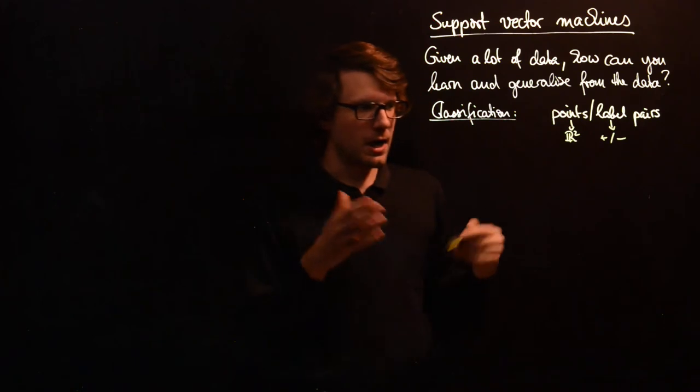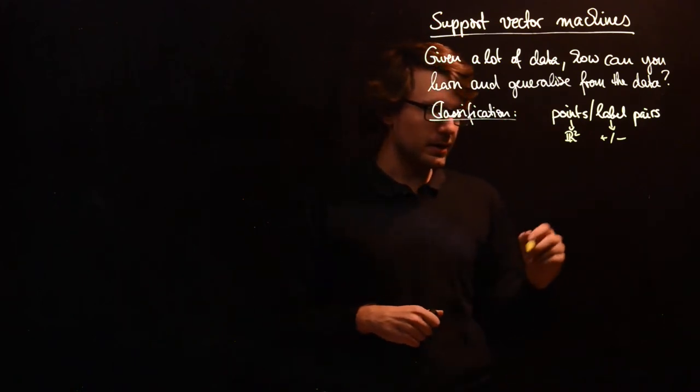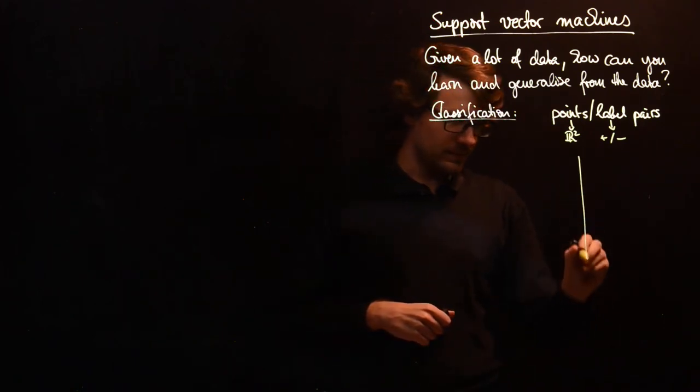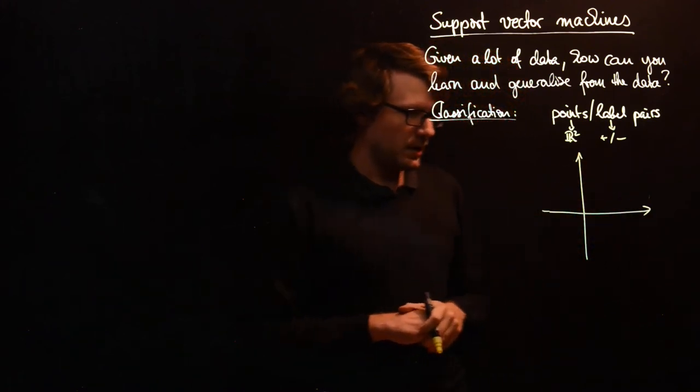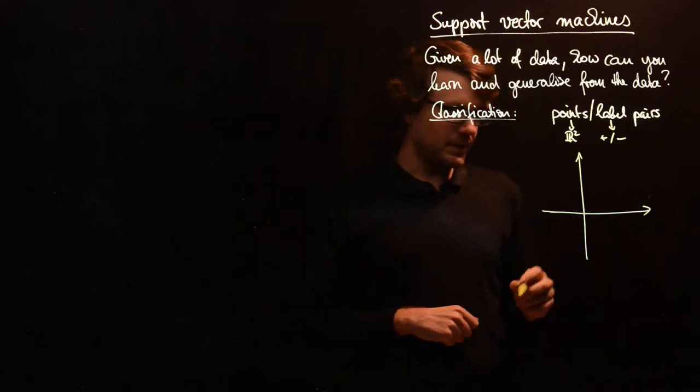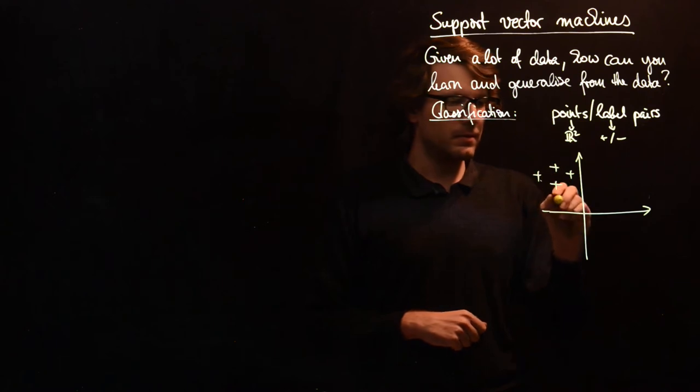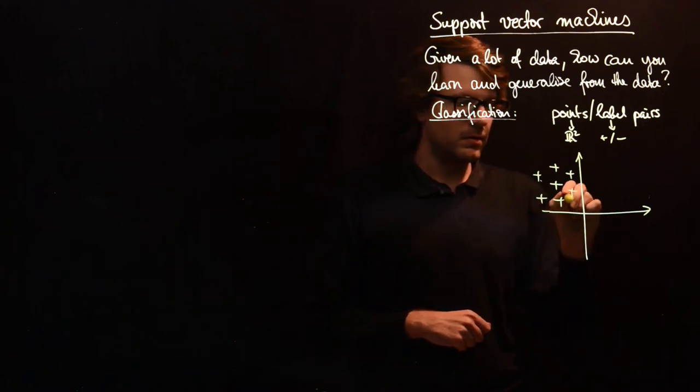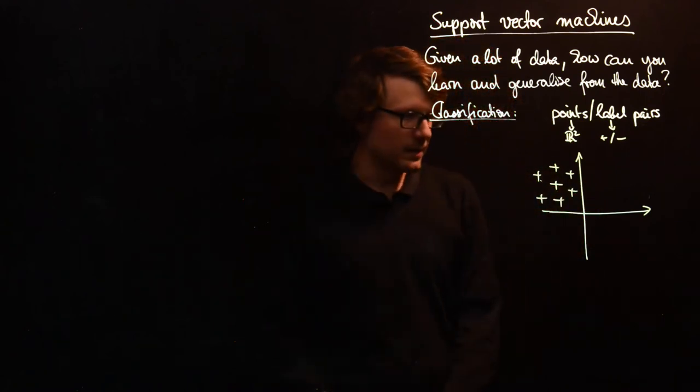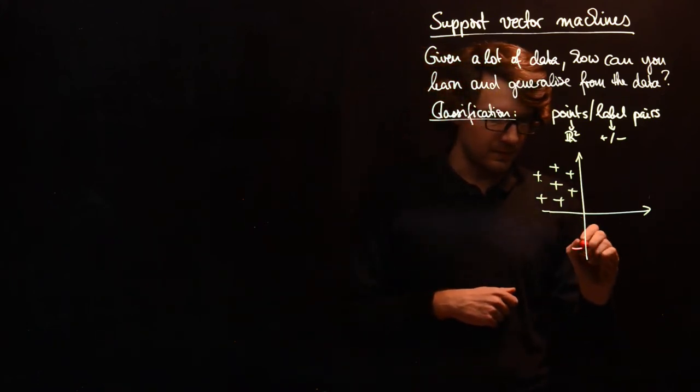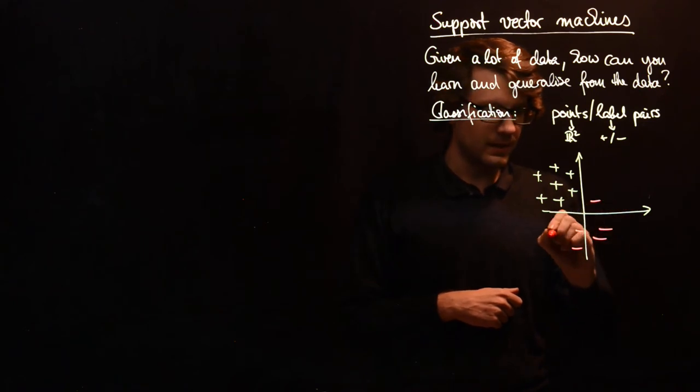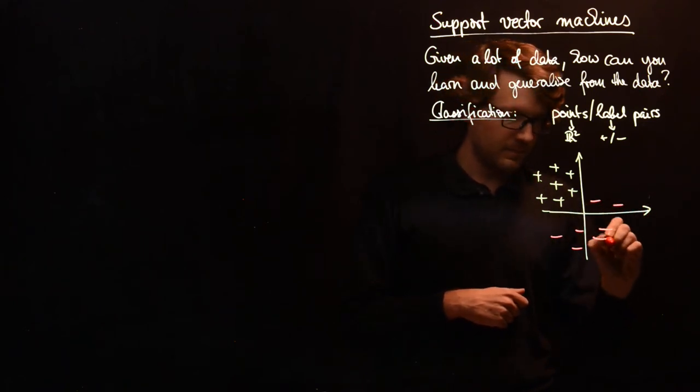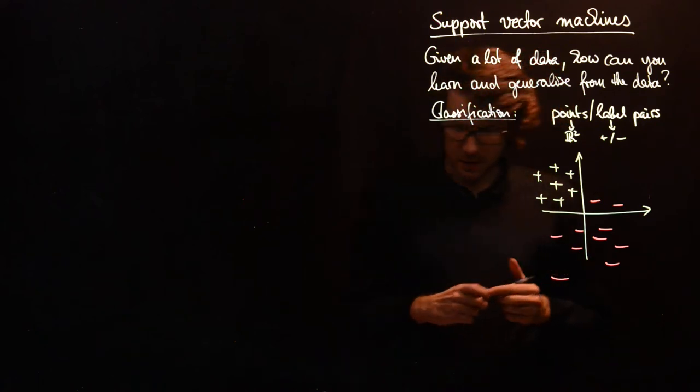So how could this potentially look like? Let's draw our plane here. And then let's say that we have a lot of points with a plus one label. And then on the other hand we have some points with a minus one label like this.